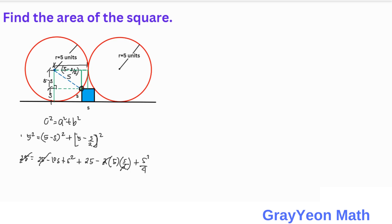This cancels out the 25, and simplifying this becomes 5S, negative 10S, so negative 15S. And this becomes S squared plus S squared over 4, and we have positive 25 equal to 0.